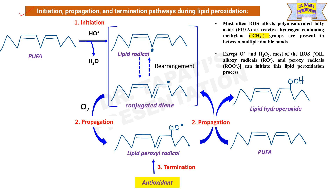This figure shows the initiation, propagation, and termination pathways during the peroxidation process of polyunsaturated fatty acids. ROS elements most often affect PUFAs because reactive hydrogen-containing methylene groups are present between multiple double bonds. In this figure, two double bonds are present and the active methylene group where reactive hydrogen is located is indicated.